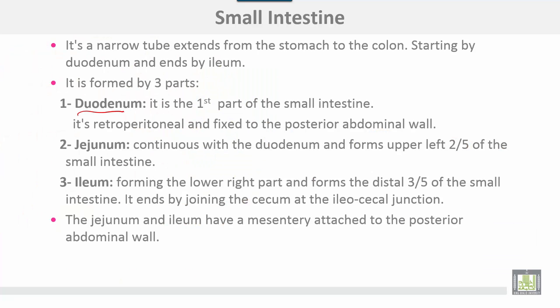The small intestine is a narrow tube connecting between the stomach and the colon, starting with the duodenum and then the jejunum. It is formed by three parts: duodenum, the first part of the small intestine, which is retroperitoneal and fixed to the posterior abdominal wall; jejunum, which continues with the duodenum and forms the upper left two-fifths; and ileum, forming the lower right part and the distal three-fifths, ending by joining the cecum at the ileocecal junction.